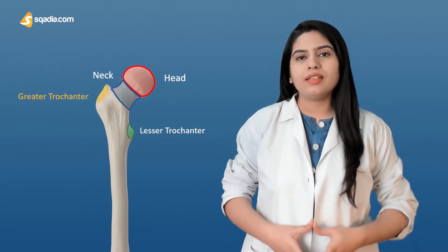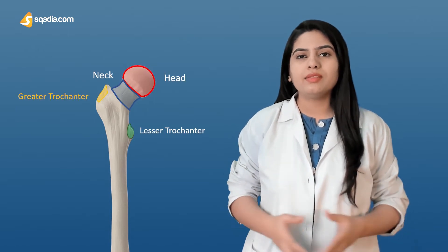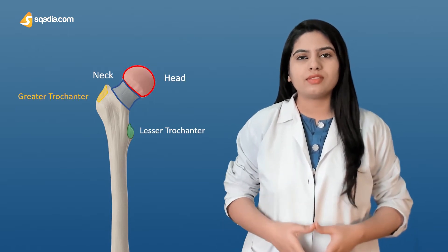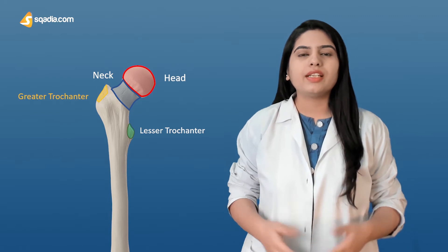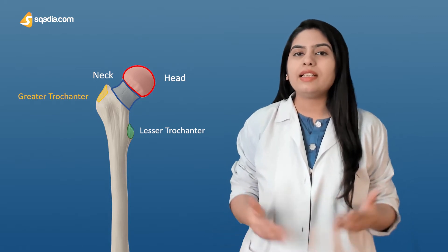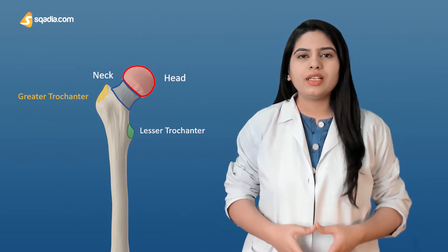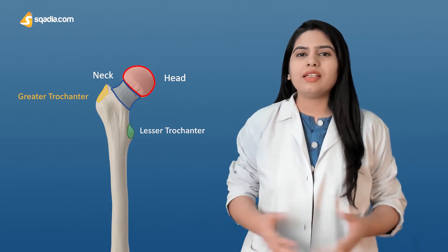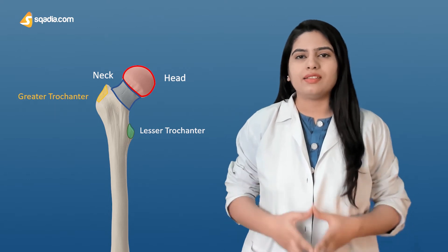The first region is the proximal area that articulates with the acetabulum to form the hip joint. Generally it consists of four parts: head and neck, and two bony processes — the greater and the lesser trochanters. Let's study these landmarks in detail.